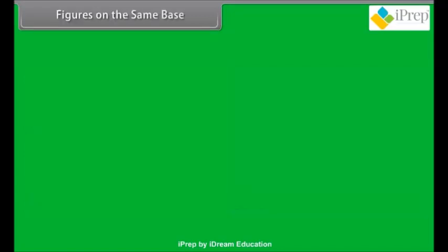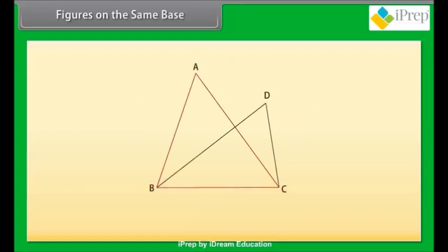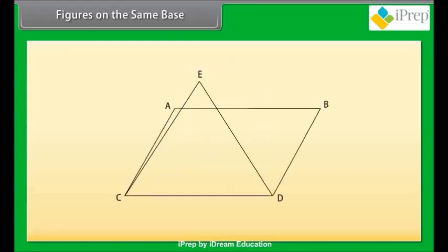Figures on the same base. Look at this figure. We have got two figures here: a rectangle ABCD and a parallelogram CDEF. We can see that both the figures are on the same base CD. Similarly, in this figure, triangle ABC and triangle BCD are on the same base BC. Here, a triangle ECD and a parallelogram ABCD are on the same base CD.